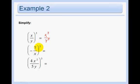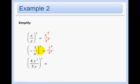In this problem we have a negative squared. A negative squared is a positive. Then we have 7 squared over x squared. 7 squared is 49 and x squared is just x squared, so our answer is 49 over x squared, and we leave it.